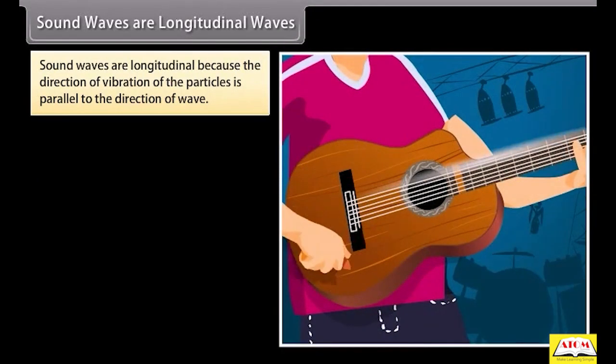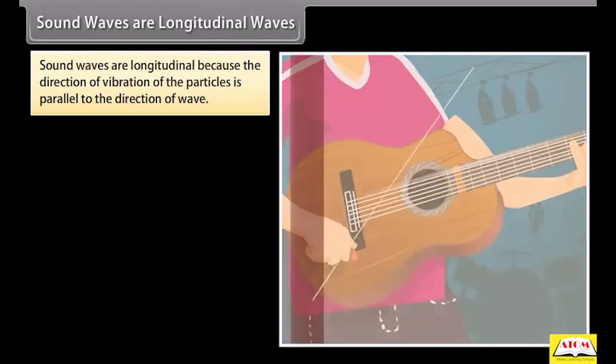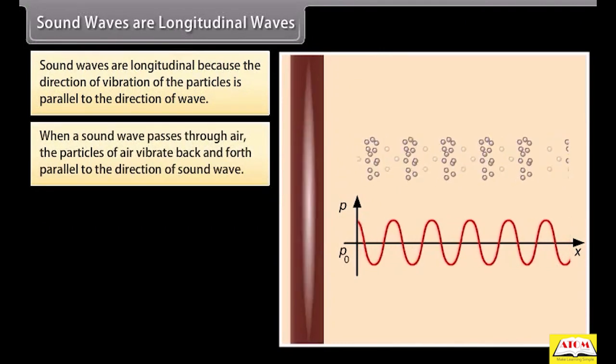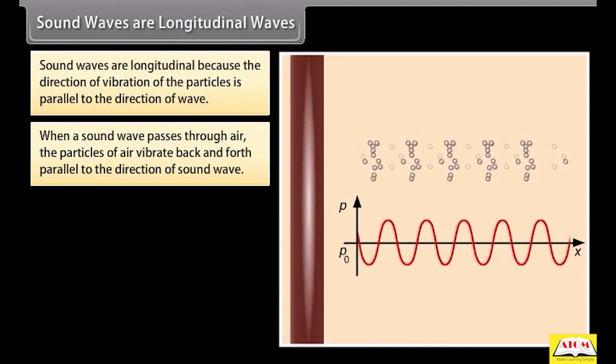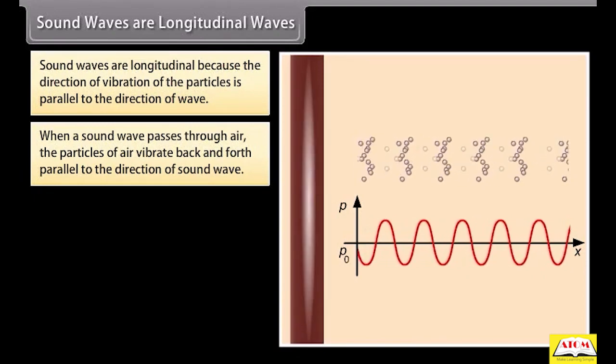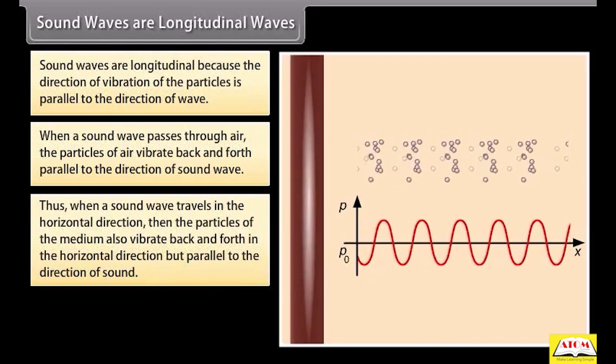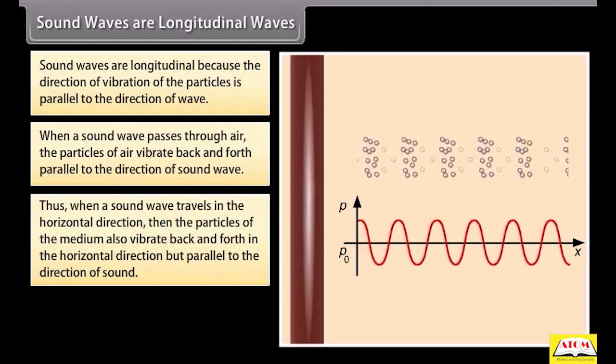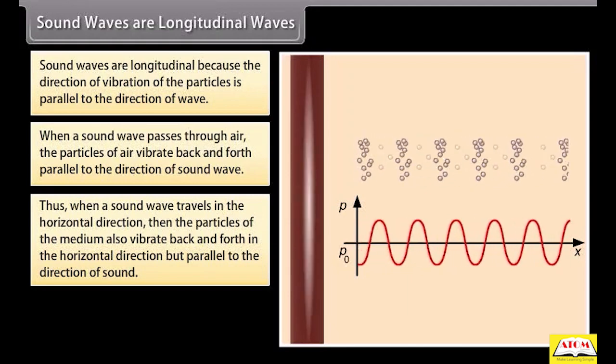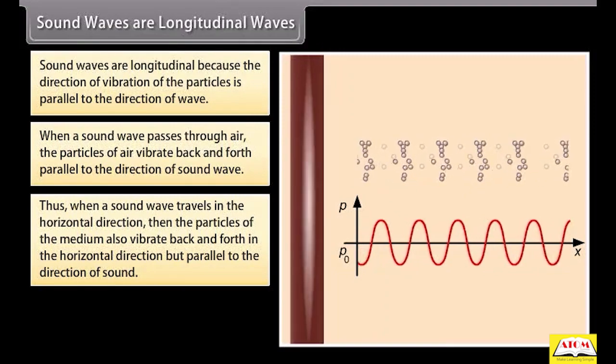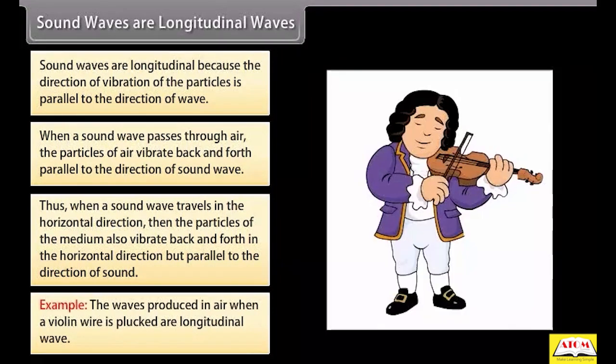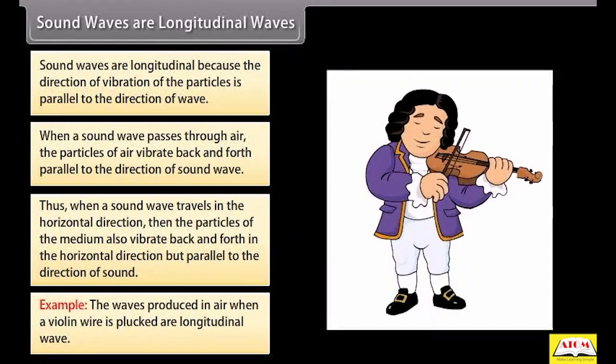Sound waves are longitudinal because the direction of vibration of the particles is parallel to the direction of wave. When a sound wave passes through air, the particles of air vibrate back and forth parallel to the direction of sound wave. Thus, when a sound wave travels in the horizontal direction, then the particles of the medium also vibrate back and forth in the horizontal direction but parallel to the direction of sound. For example, the waves produced in air when a violin wire is plucked are longitudinal waves.